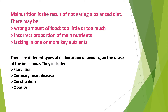We will now discuss what malnutrition is. It is the result of not eating a balanced diet. There may be a wrong amount of food — too little or too much — an incorrect proportion of main nutrients, or it could also be lacking in one or more key nutrients.